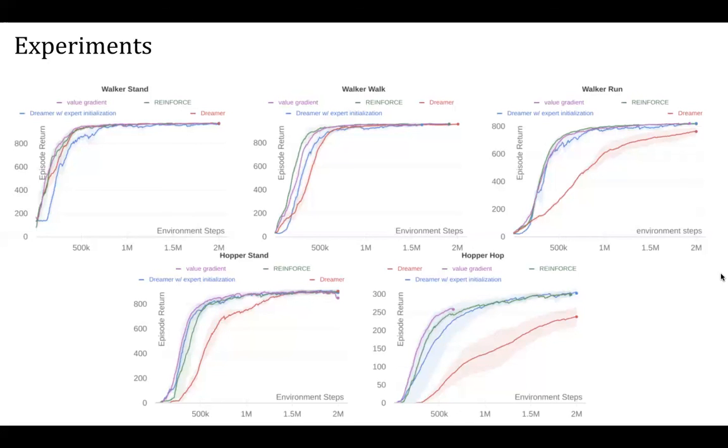In this work, we conducted a preliminary line of experiments. We used the DeepMind control suite as the main testbed. First, we run vanilla DREAMER on a test set of five tasks: Walker Stand, Walker Walk, Walker Run, Hopper Stand, and Hopper Hop.